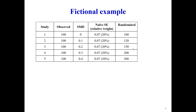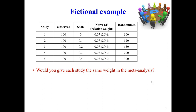Now suppose I give you extra information: the number of participants randomized to each study. In the first trial, 100 were randomized and you got data for all of them. In the second trial, 120 were randomized and you have data for 100 — so 20 are missing. In the last trial, 300 were randomized and you have data for only 100, meaning 200 participants — 67% — are missing.